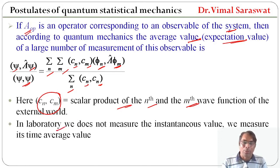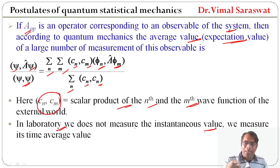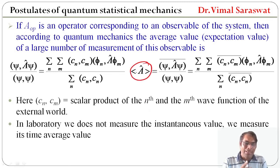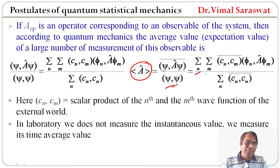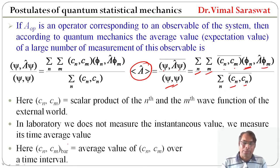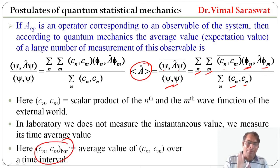In the laboratory, we do not measure the instantaneous value; we measure its time average value — that is, the ensemble average. So, the ensemble average of operator A equals ⟨ψ|A|ψ⟩̄ / ⟨ψ|ψ⟩̄ = Σ_n Σ_m c̄_n* c̄_m ⟨φ_n|A|φ_m⟩ / Σ_n c̄_n* c̄_n, where c̄_n* c̄_m is the average value of c_n* c_m over a time interval.